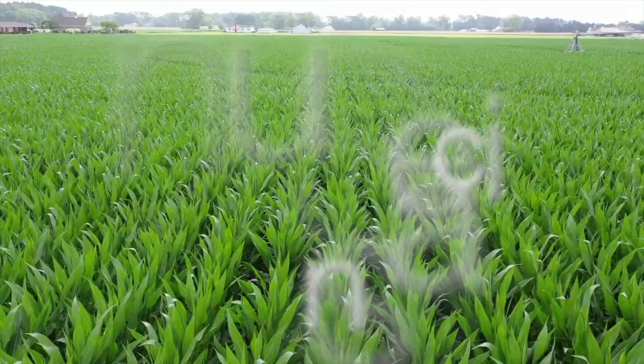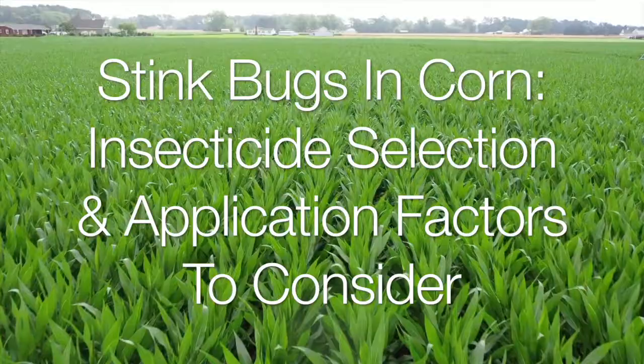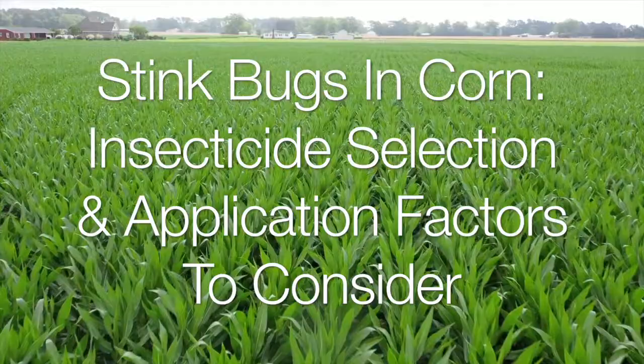You can do the best job possible with regards to identifying and scanning for stink bugs in corn, but if you do not put as much consideration into the type of insecticide used, or give consideration to the manner in which your insecticide is applied, you could still come up short and not get the control you desire. This video, 'Stink Bugs in Corn: Insecticide Selection and Application Factors to Consider,' will help in those regards.